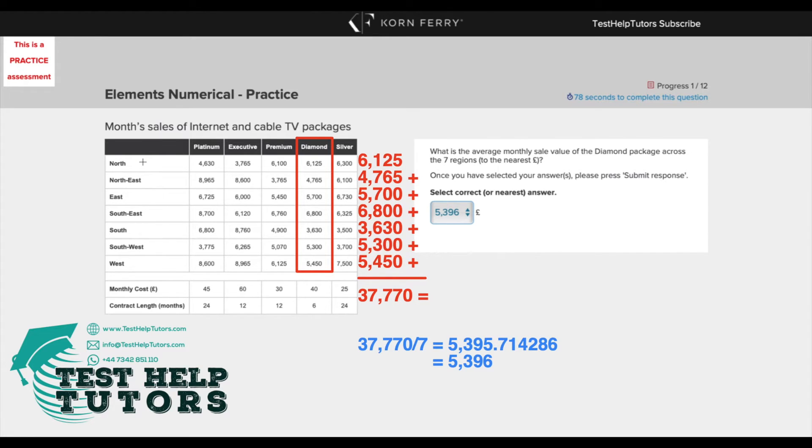The question asks us to work out the average monthly sale value for the diamond package across the seven regions. So we know we have to focus on this diamond column here. The way to read this table would be for north we have 6,125, for northeast we have 4,765, and so on and so forth.